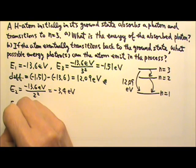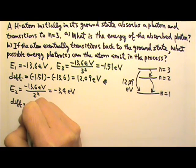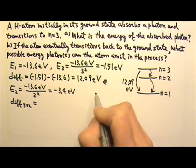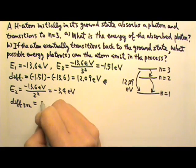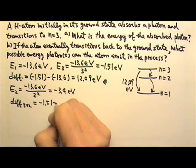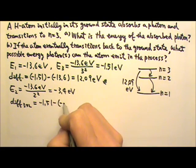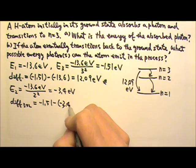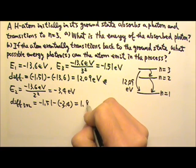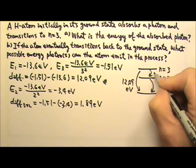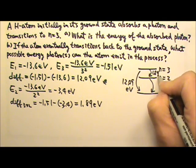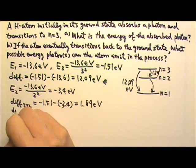That means from 3 to 2, the difference would equal negative 1.51 minus negative 3.4, and this gives me 1.89 eV. So this one is 1.89 eV.